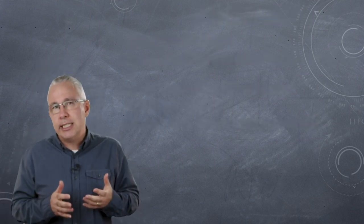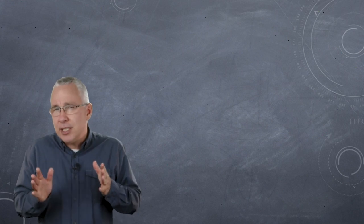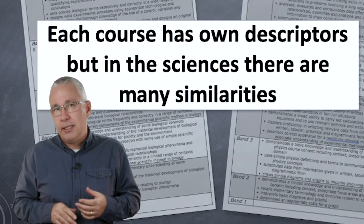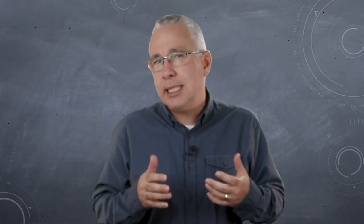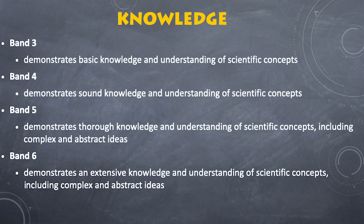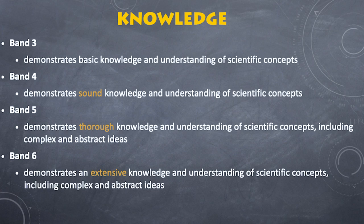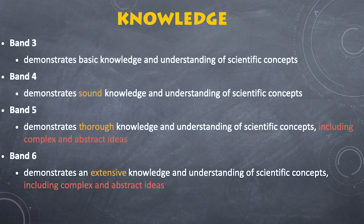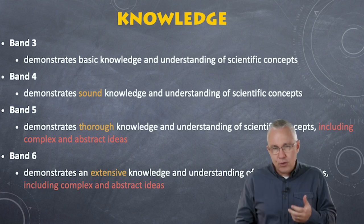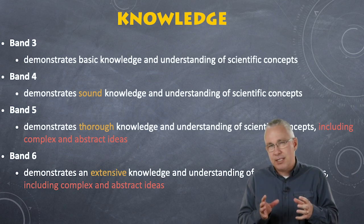Now let's break down what these descriptions are actually saying. I'm using the ones for physics, but they're pretty much identical for all other subjects with minor differences. The descriptions are broken down into a number of categories. The first is knowledge. As you go up the bands, a student demonstrates higher-order understanding. We start from basic, move to sound, then thorough, and a band 6 student is extensive — not only extensive but able to include complex and abstract ideas, with understanding so deep they can apply knowledge to new situations.